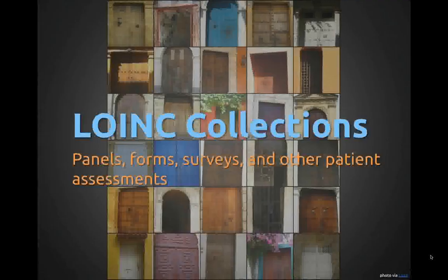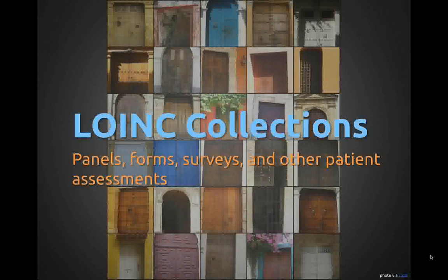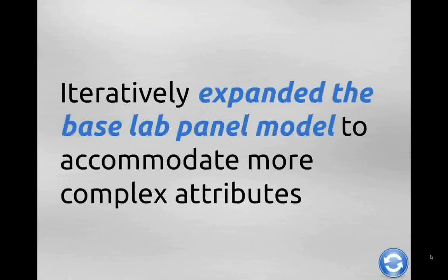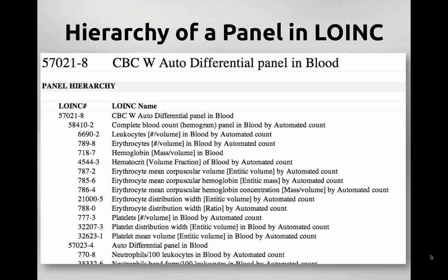That's the basics of how a LOINC observation code is created. LOINC also creates codes to represent collections — a generic word for laboratory panels or batteries, forms, surveys, and other patient assessment instruments. We've written papers describing the evolution of the data model for representing this content. Basically, we iteratively expanded our base model for representing laboratory panels to accommodate more complex attributes of other kinds of collections. Here's an example panel: the CBC with auto differential — an enumerated set of child elements that can themselves be panels, representing nesting such as sub-panels of the hemogram and auto differential.